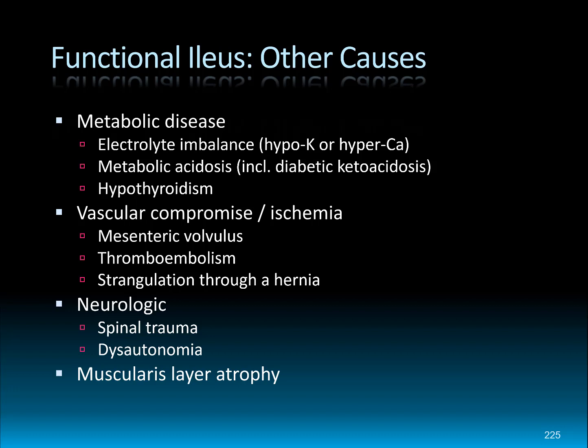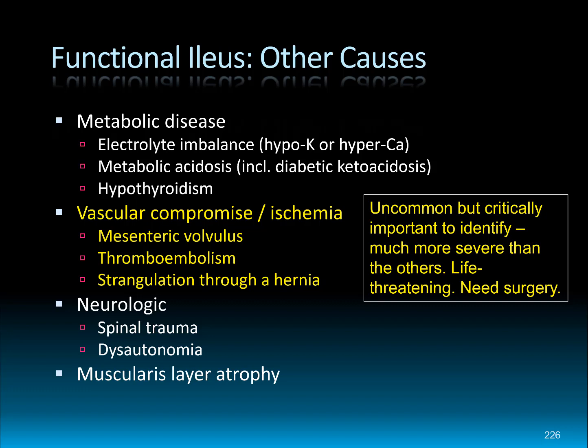There are many other causes of functional ileus. Metabolic disease is important — anything from electrolyte imbalance to hypothyroidism. Neurologic disease and muscularis layer atrophy are other causes, though not very common. An important one that looks different is vascular compromise or ischemia, most commonly due to mesenteric volvulus, although thromboembolic disease or strangulation can also cause this. These are not common, but they represent a much more severe and life-threatening situation, so I'll cover them after discussing the more typical versions of functional ileus.